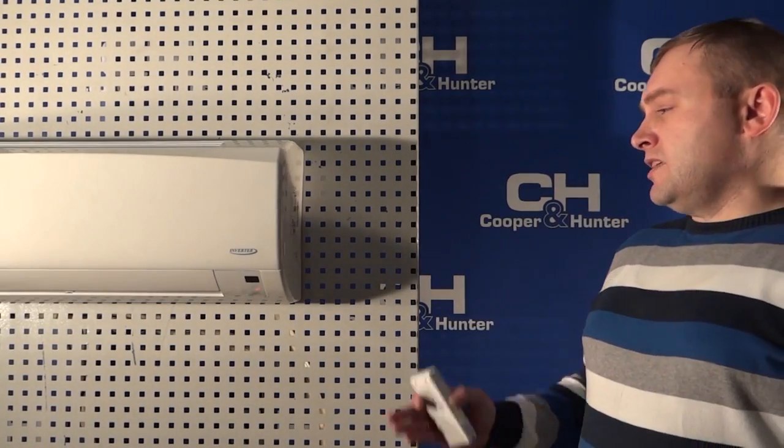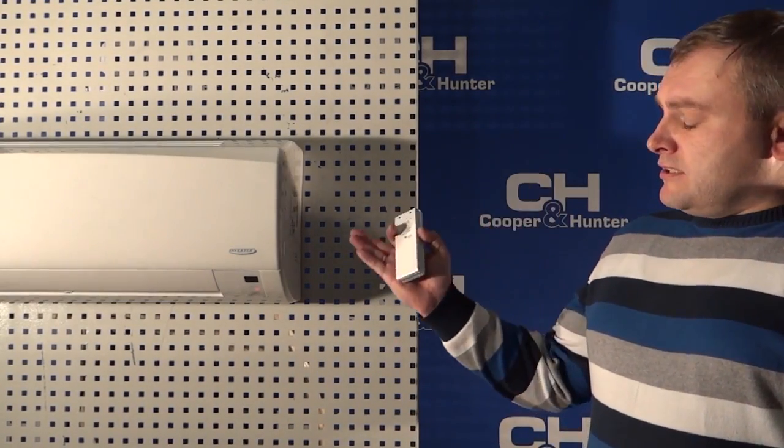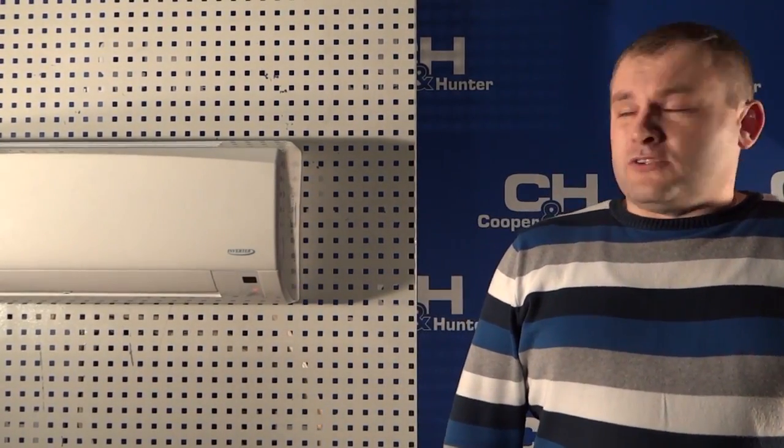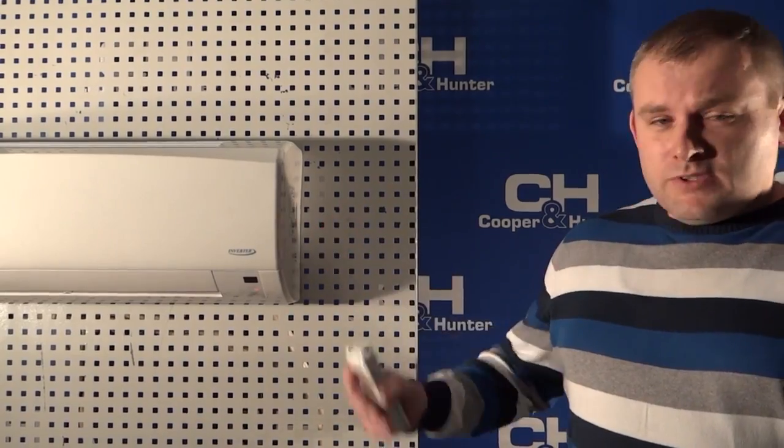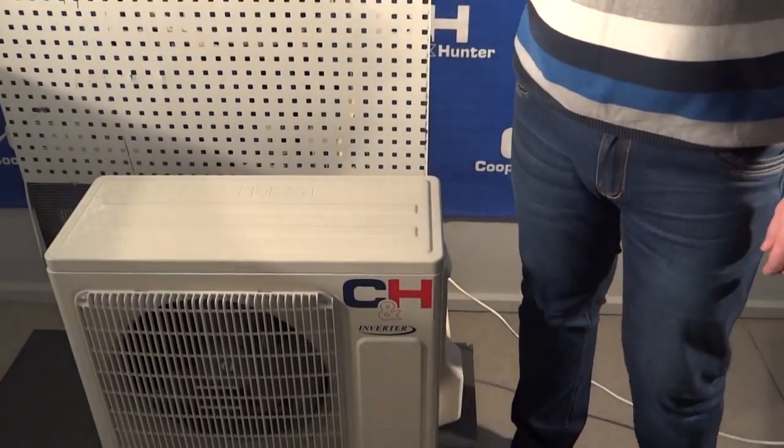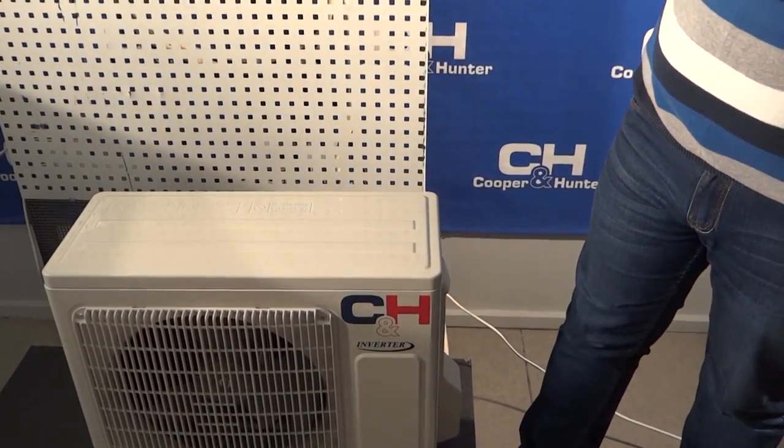For diagnostics we will use the air conditioner Cooper & Hunter model CHSO9FTXN. Error codes F1 and F2 are the temperature sensors of the indoor unit and F3, F4, and F5 are the temperature sensors of the outdoor unit. Let's proceed to diagnosis.